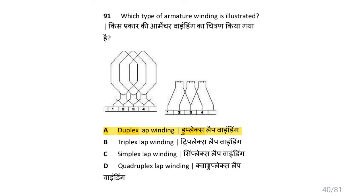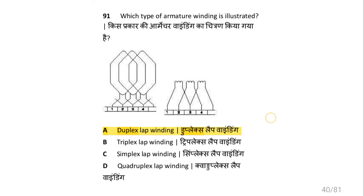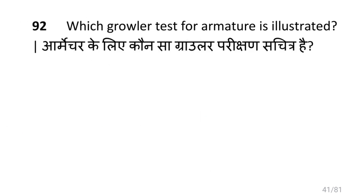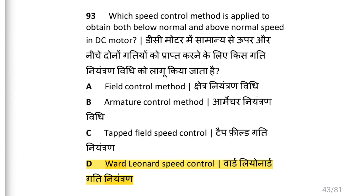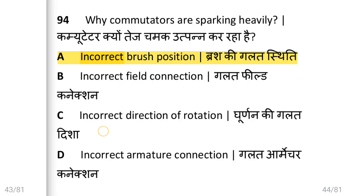Which type of armature winding is illustrated? That is duplex lap winding. Which growler test for armature is illustrated? That is open coil test. Which speed control method is applied to obtain both below normal and above normal speed in DC motor? That is Ward-Leonard speed control.